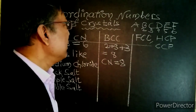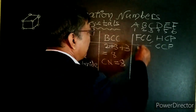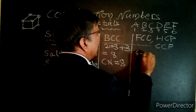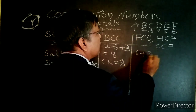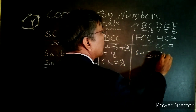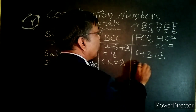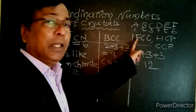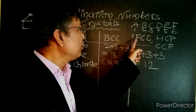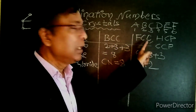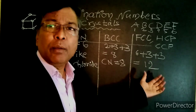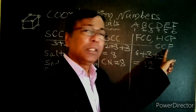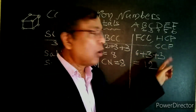Now for FCC: F has a value of 6, and C is plus 3, and another C is also plus 3. Therefore the total becomes 12. The coordination number of FCC, that is face centered cubic crystal, is 12. Similarly, the coordination number of HCP as well as CCP is also 12.